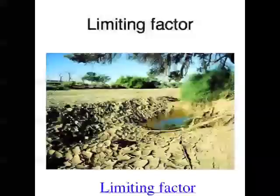For example, humans require oxygen to survive, but oxygen is found in a limited amount in water. Because humans can't get enough oxygen out of water, they're limited to being terrestrial organisms, or living on land. So the distribution of humans is only terrestrial — they can't live in water because there's not enough oxygen, and that limiting factor limits their survival.